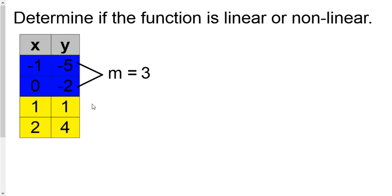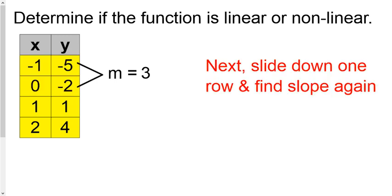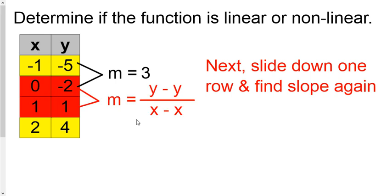The problem is we don't know if the slope is the same further down, so the next step is to slide down one row — not two, just one. So instead of using rows one and two, we'll use rows two and three. Again, we find the slope using these two rows: plug in your y's, plug in your x's, and find out what the slope is.